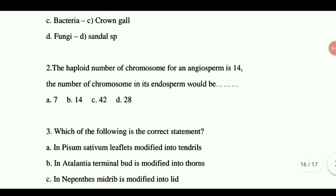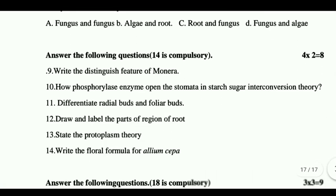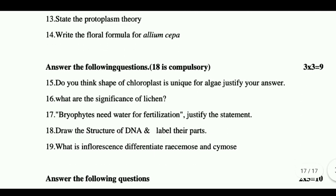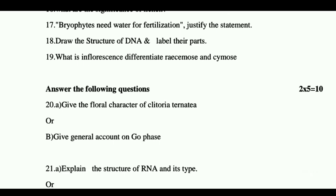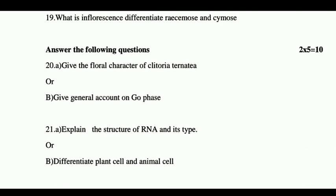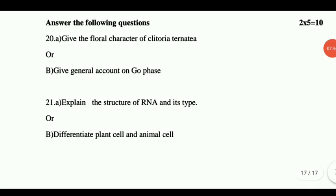So we have another set of questions. It's very important: write the distinct features of Monera, how phosphorylase enzymes have opened the stomata and starch-sugar interconversion theory, difference between radial symmetry and bilateral symmetry, draw and label parts of region of roots, state the protoplasm theory, write the floral formula of Allium cepa, do you think the shape of chloroplast is unique for algae — justify your answer, what is the significance of lichen, Bryophytes need water for fertilization — justify the statement, draw the structure of DNA and label the parts, what are the influences in different types of racemes and cymose inflorescences, give the floral characters of Clitoria ternatea, give a general account of G0 phase, explain the structure of RNA and its types, difference between plant and animal cells.